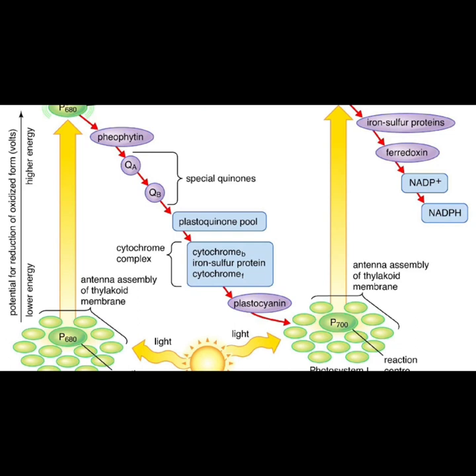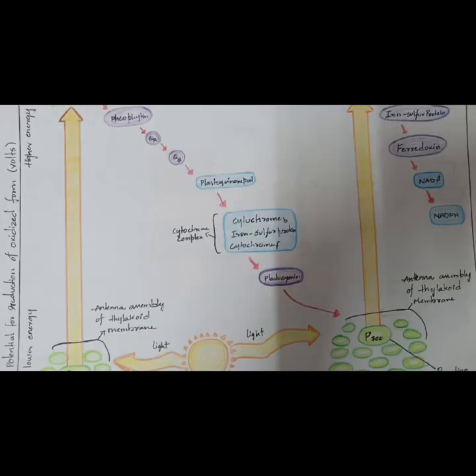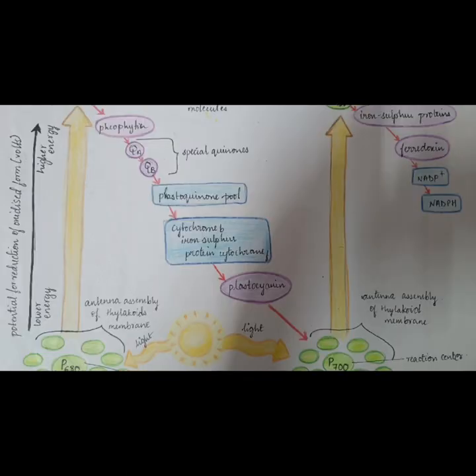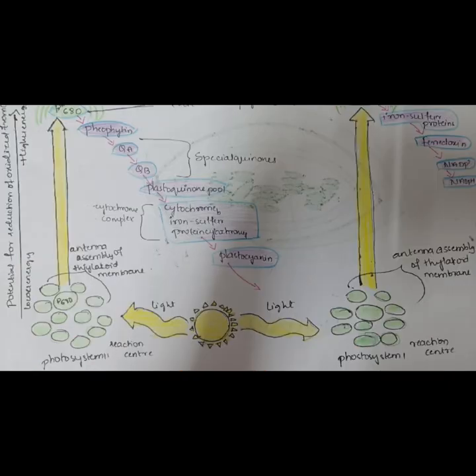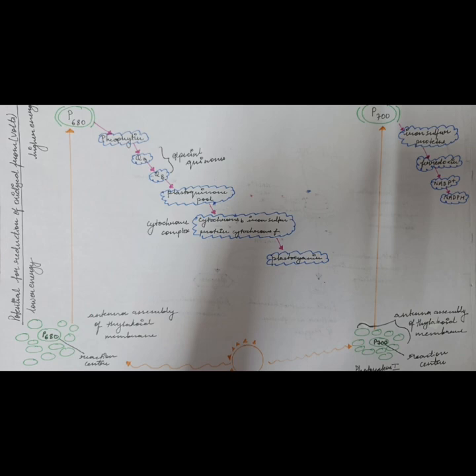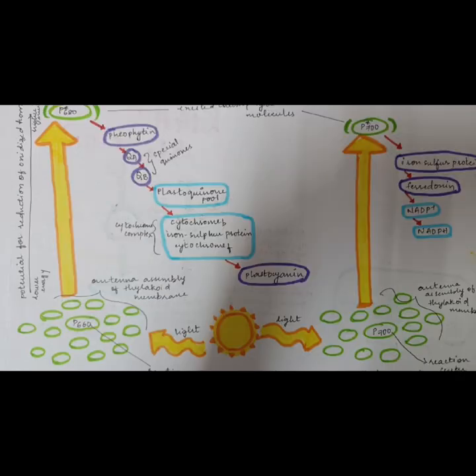The special pair's missing electron is replaced by a new electron from PS2 arriving via the electron transport chain.